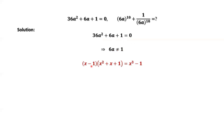Here is the important formula we are going to use to help us solve this question: x minus 1 times x squared plus x plus 1 equals x to the power of 3 minus 1.